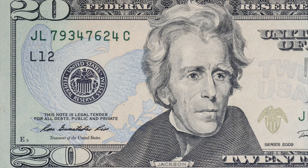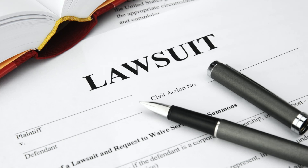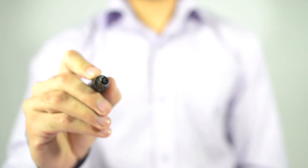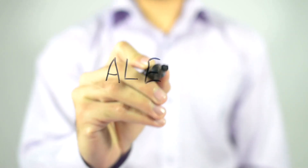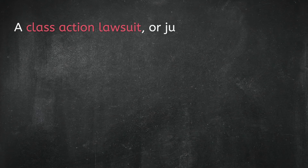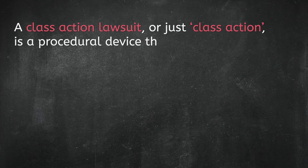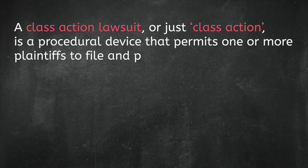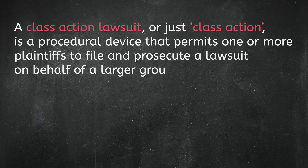The Seventh Amendment is an important one. It requires any case that involves over $20 to have a jury of peers. It also notably creates the right to bring a class action lawsuit against large institutions. A class action lawsuit, or just class action, is a procedural device that permits one or more plaintiffs to file and prosecute a lawsuit on behalf of a larger group, or class.